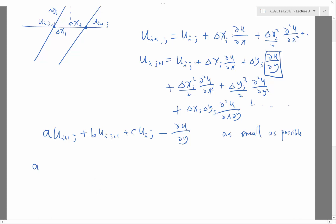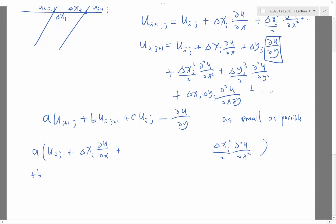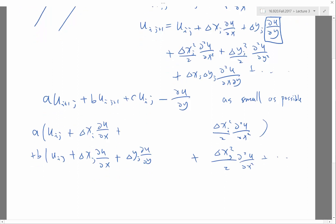So how do I do that? I'm going to perform a combination. I'm going to have A times, which I'm just going to copy here, U I J plus Delta X I times partial U partial X plus Delta X I squared, etc. Plus B times U I J plus Delta X J, the same thing, same derivative, but I also have this, then I have this, then I also have Delta X J squared, etc.